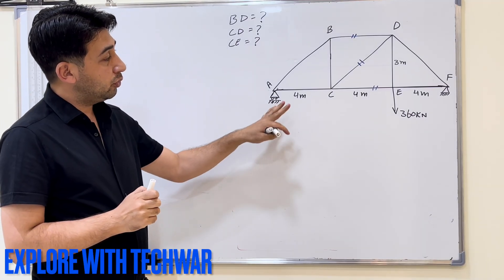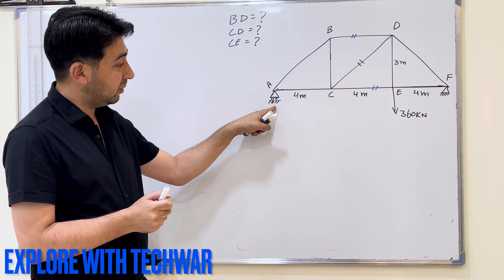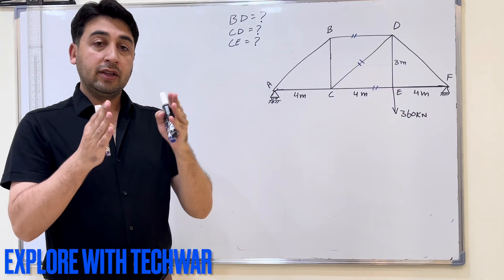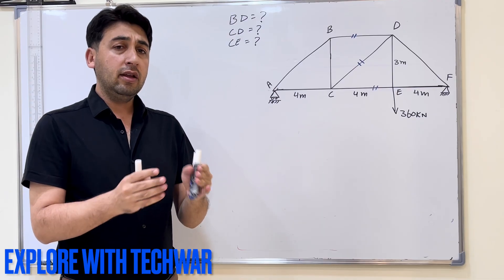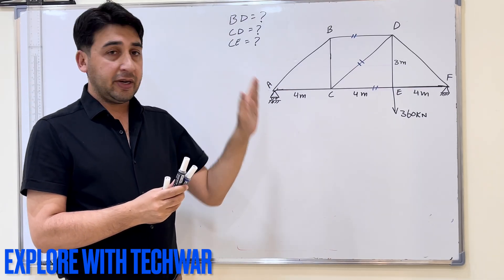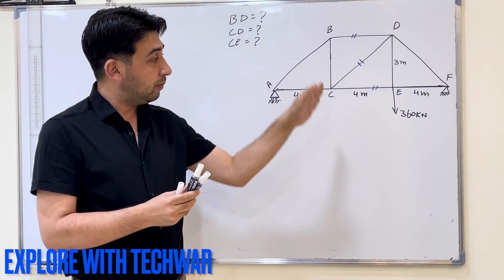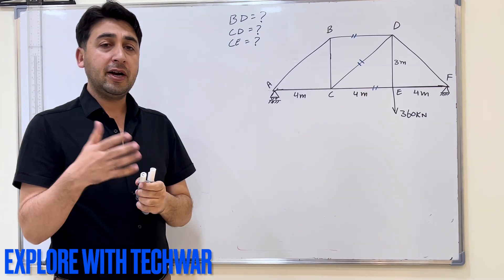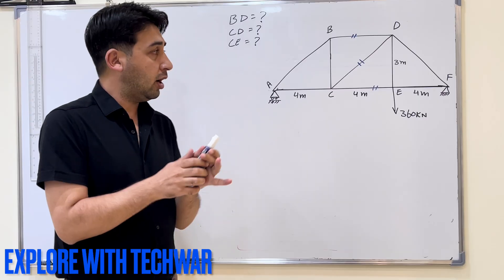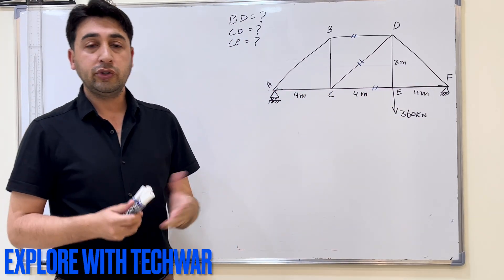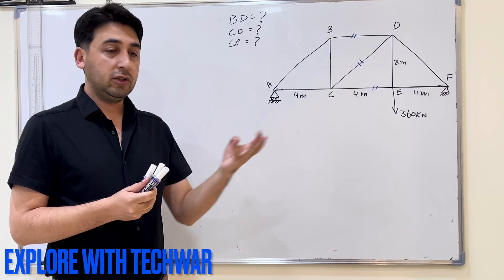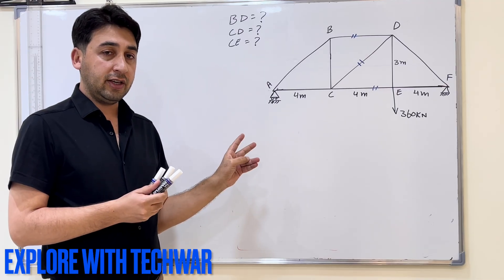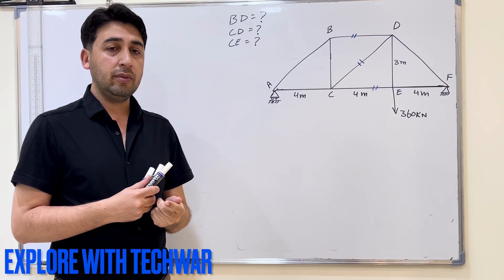Step by step I will solve this problem. First of all, we have to look for the global reactions. We have a roller support on this side and a pin support on the other side. First we will find the global reactions, then we will cut the truss through the members of interest. Then we will redraw the free body diagram of half the section — whichever half is easier. Then we will use conditions of equilibrium to solve for the unknowns.